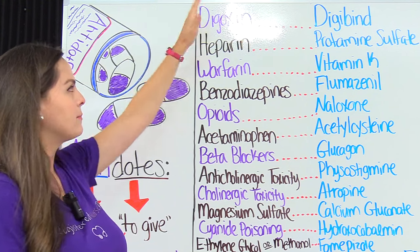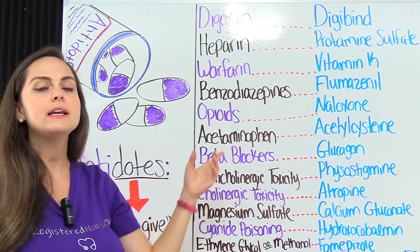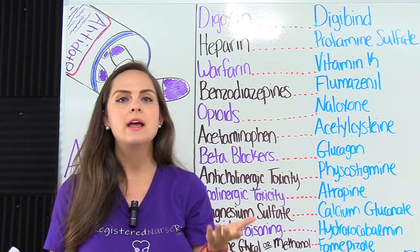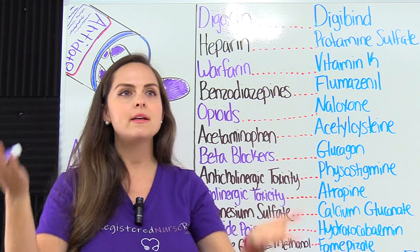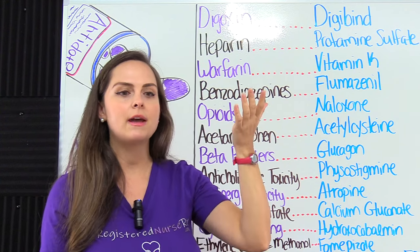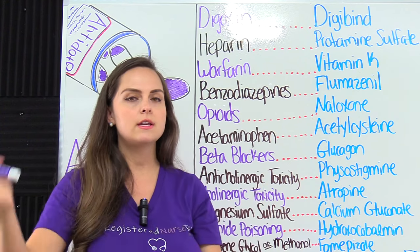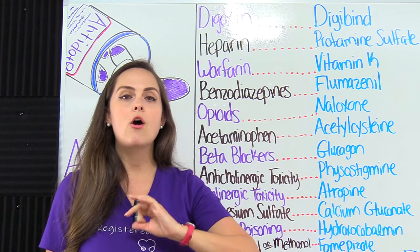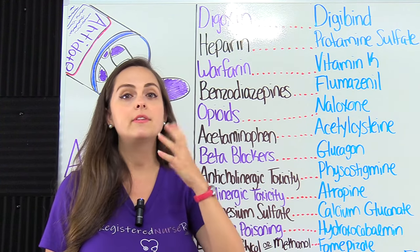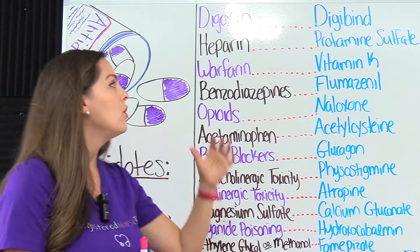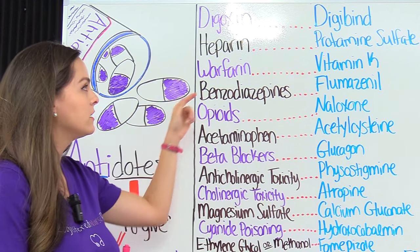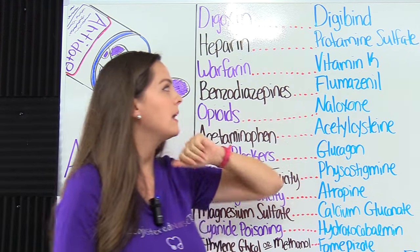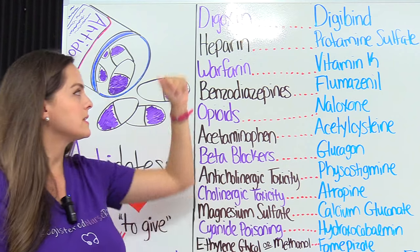Then we have heparin. Heparin is an anticoagulant, so it's a blood thinner. It's a fine balance between having a patient's blood too thin or too thick. If they are experiencing heparin toxicity — too much on board — we can give the antidote protamine sulfate, and that will help reverse that.